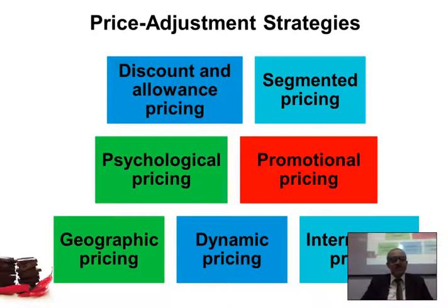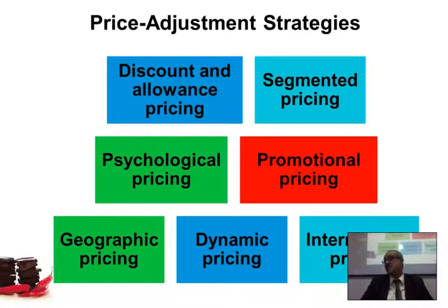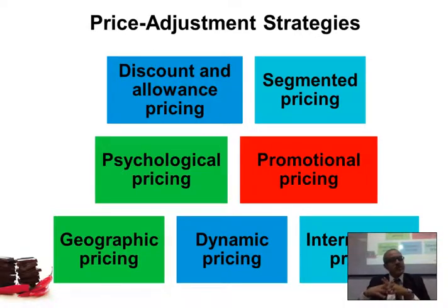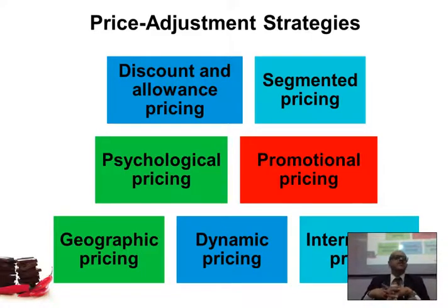Here we talk about price adjustment strategies — these are different types of price adjustments. Let's say you have already set up the price and now you want to consider strategies to adjust it. For example, if you sell a battery for $100, maybe you want to lower the price but don't want to announce a reduction. One strategy is to do a discount — for instance, selling batteries for 20% off, or buy one get one free.